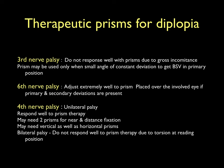In nerve palsies, prisms can be used in long-standing cases when the angle of deviation is very small, diplopia is persistent, and the angle is stable. Patients with 6th nerve palsy respond very well to prisms in primary position. Patients with 3rd nerve palsy do not respond well due to gross incomitance; however, if the angle is constant and small, prisms can be tried. In 4th nerve palsy, prisms can be tried if the angle is stable; they may need separate prisms for distance and near, and may require both vertical and horizontal prisms. Bilateral 4th nerve palsy does not respond well to prisms due to a large degree of torsion, though this may vary case to case.